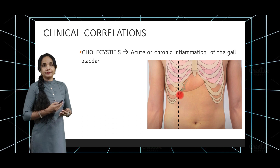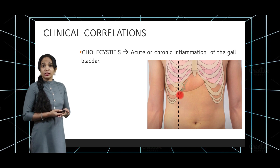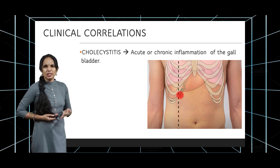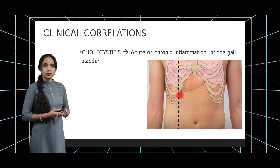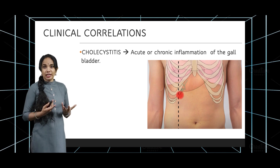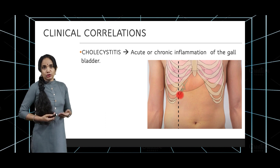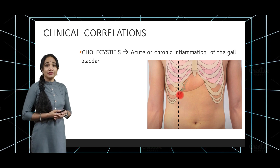Murphy's sign is elicited by the surgeon in a case of acute cholecystitis: the surgeon places their hand over the ninth costal cartilage, presses down, and asks the patient to take a deep inspiration. If the patient has acute cholecystitis, there will be a catching pain in the right hypochondrium. This is because when the patient breathes in, the liver is pushed down by the right lung, in turn pushing down the gallbladder so that the fundus of the inflamed gallbladder hits the ninth costal cartilage where the surgeon's hand is pressing — eliciting pain. That is Murphy's sign.